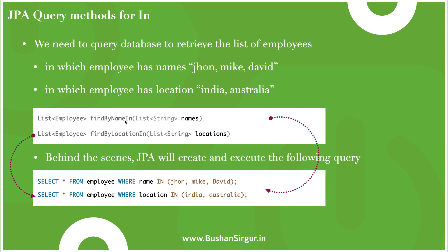The query method is findByName followed by the IN keyword, which takes a list of strings as a parameter — we pass the list of employee names: John, Mike, and David. Similarly, findByLocationIn takes a list of locations. Behind the scenes JPA will execute: SELECT * FROM employee WHERE name IN ('John','Mike','David'), and similarly for location with India and Australia.